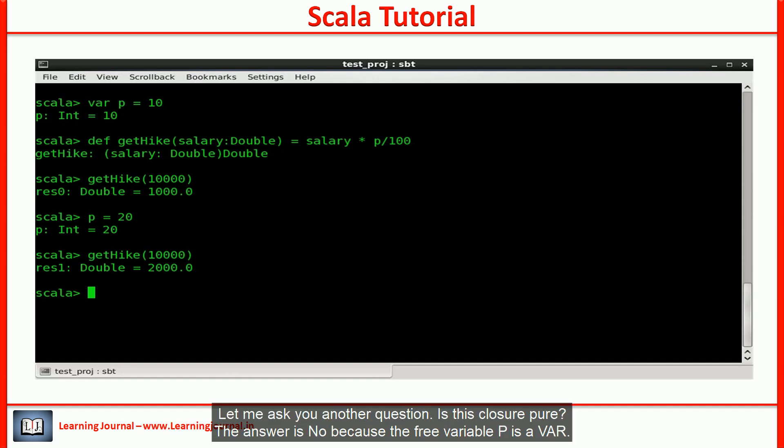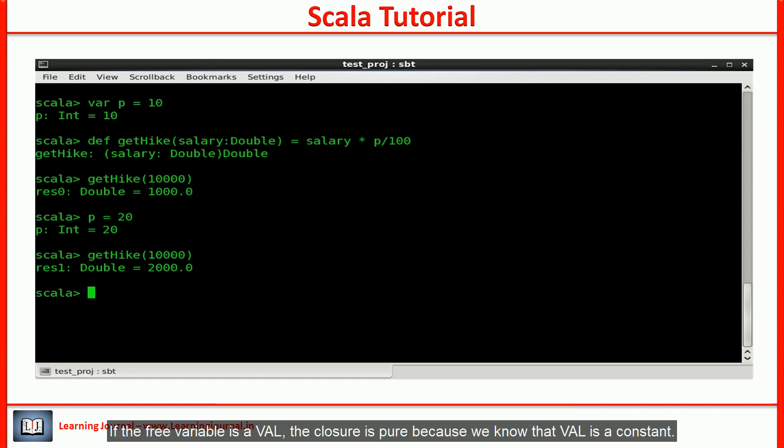Let me ask you another question. Is this closure pure? The answer is no because the free variable p is a var. If the free variable is a val, the closure is pure because we know that val is a constant.